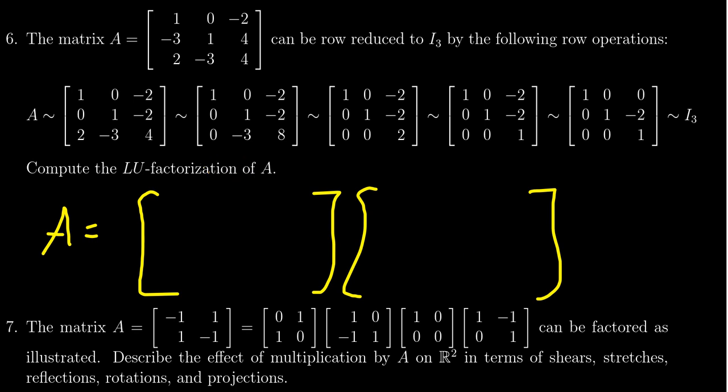Now, to find U, it turns out this sequence of row operations gives us way more information than we need. To find U, we have to grab the first echelon form we find in this sequence.